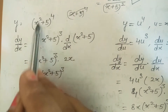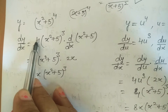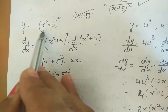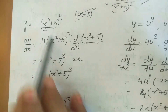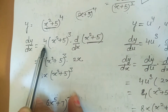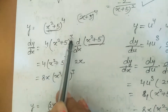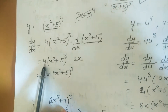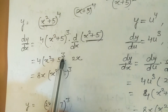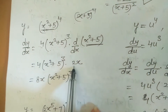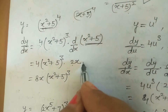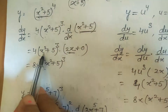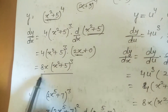Chain rule: bring the power forward, reduce power by 1, then multiply by the derivative of the inner function. So d/dx[(x²+5)^4] = 4·(x²+5)^3·d/dx(x²+5) = 4·(x²+5)^3·2x = 8x(x²+5)^3.